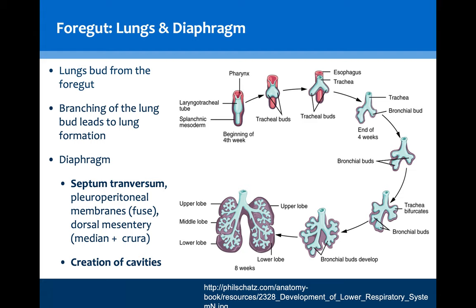Starting most cranially in the GI tube, the lungs will bud from the foregut and branching of this lung bud will lead to the formation of the alveoli and the complex lobular structure that we see in the adult. This is also why laryngotracheal sinuses and fistulas can occur due to incomplete budding or issues with the budding of the trachea from the esophagus. This may be seen through a tracheoesophageal fistula that will present through aspiration of milk in the newborn, causing coughing when feeding and regurgitation or vomiting.